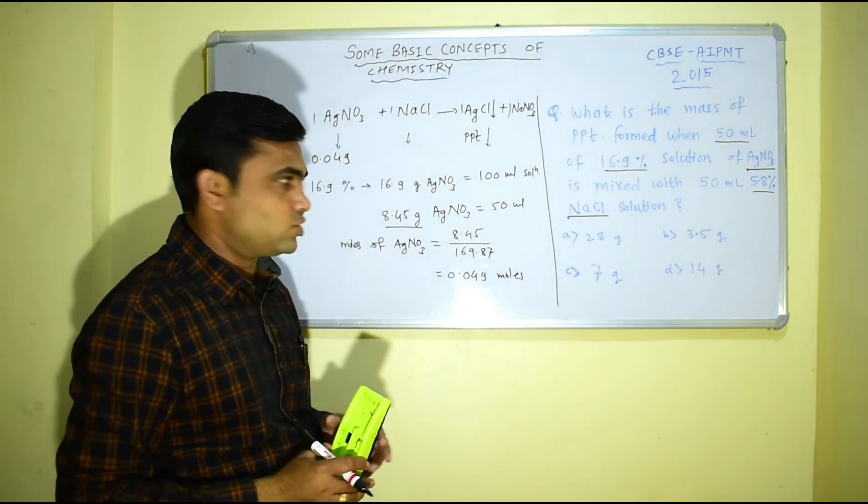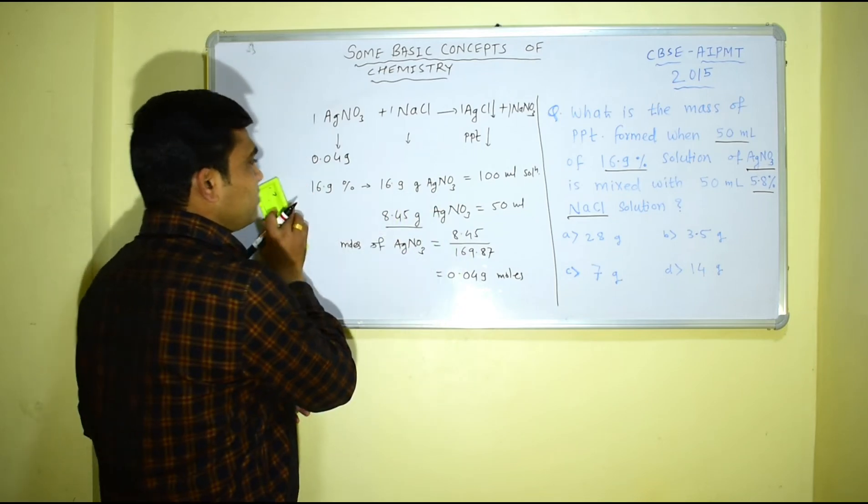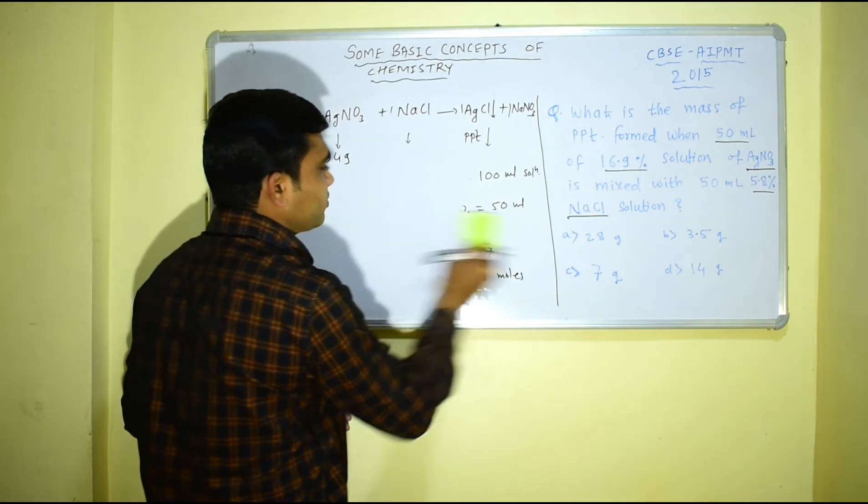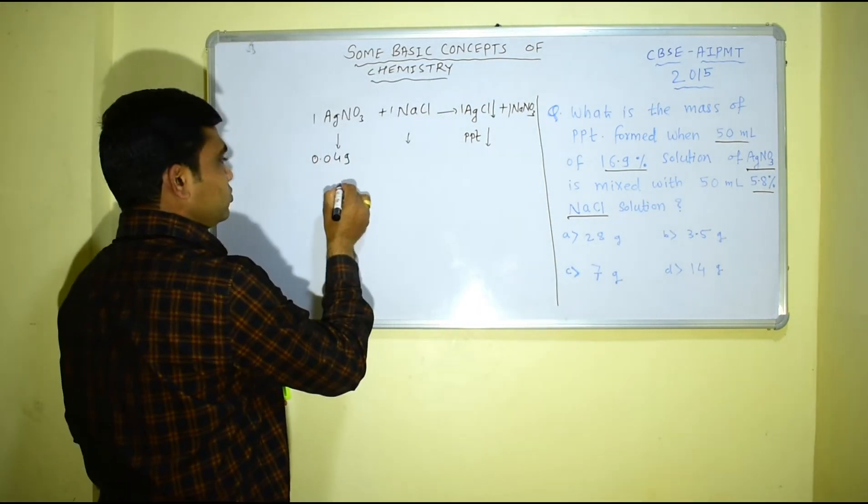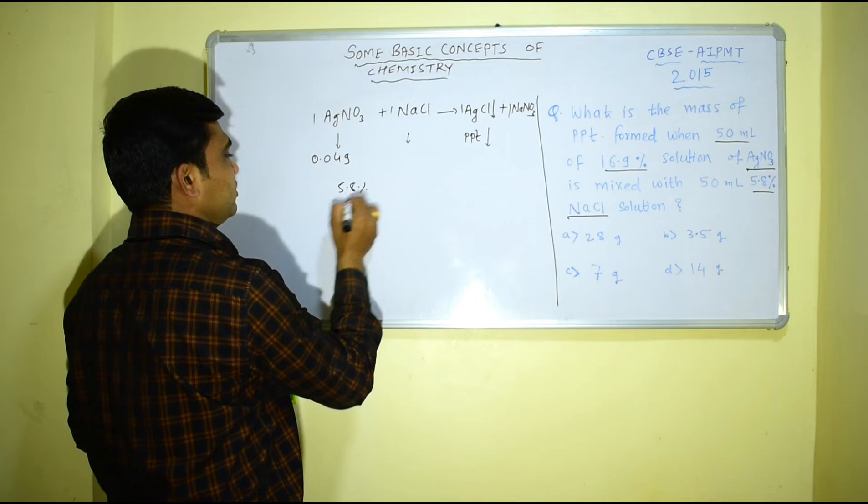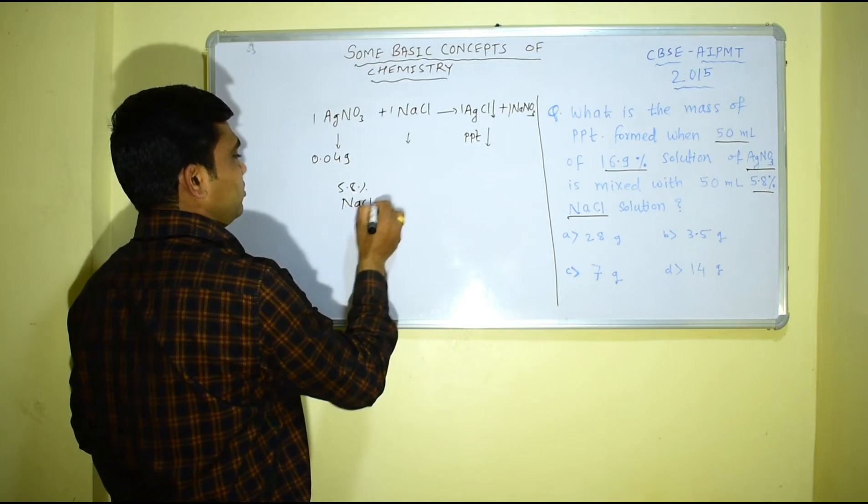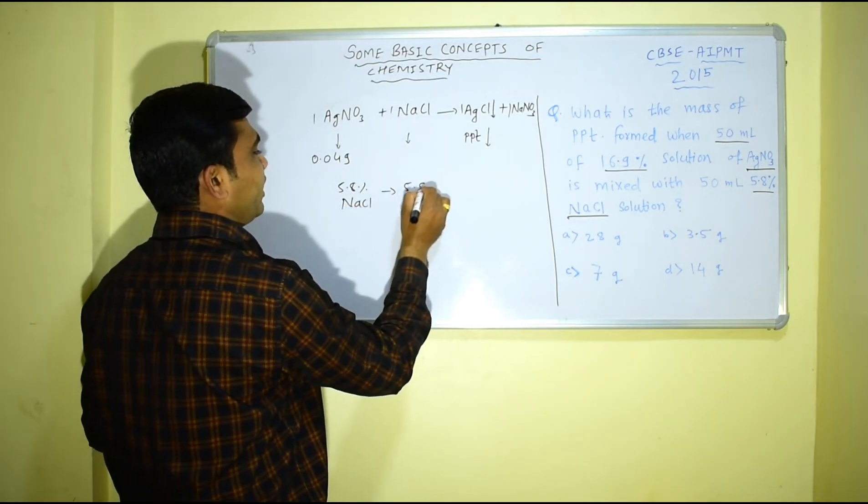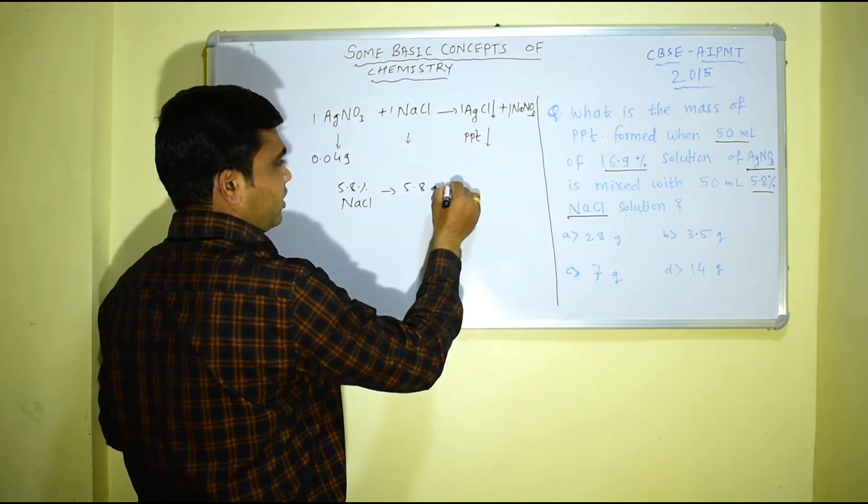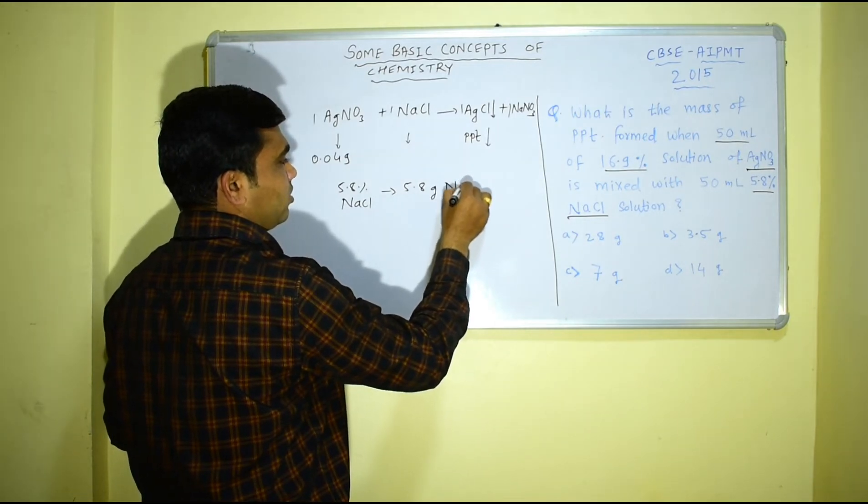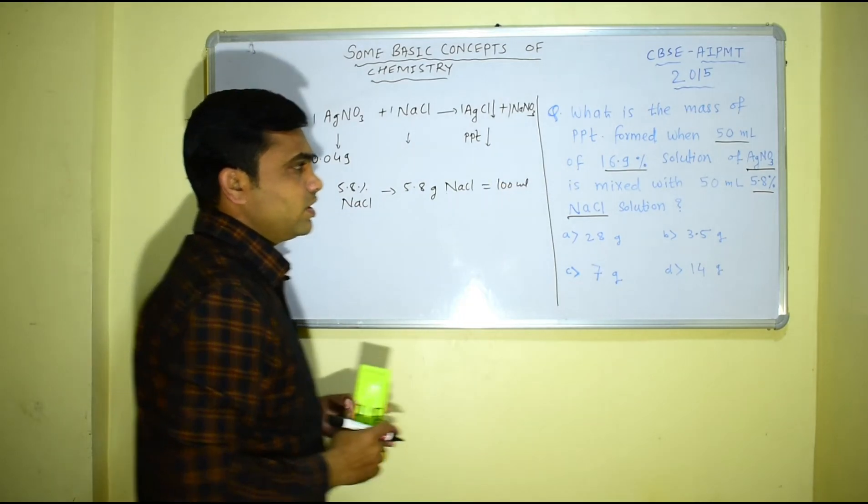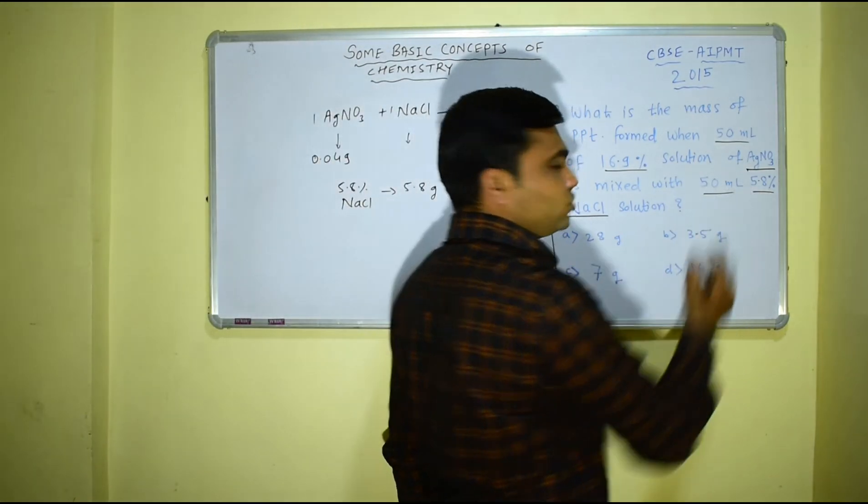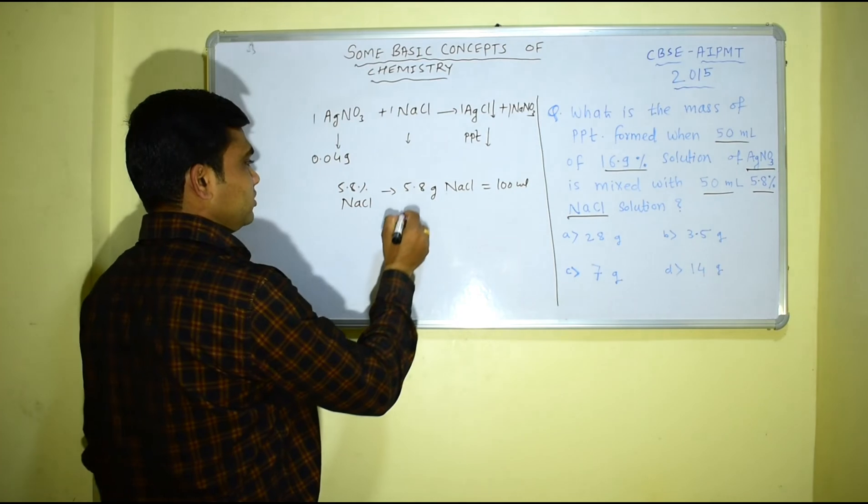Similarly we can find sodium chloride also. If I do the same calculations for sodium chloride then I will get, see they have given 5.8 percent. So 5.8 percent NaCl indicates 5.8 gram NaCl is present in 100 ml of solution. But again they have given 50 ml of solution so half of this amount, that is 2.9 gram NaCl will be present in 50 ml of solution.